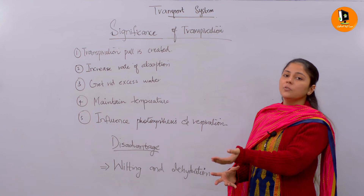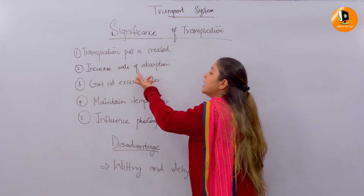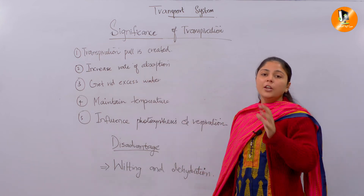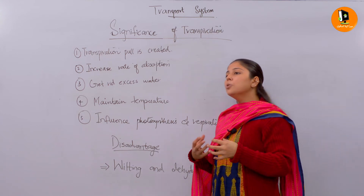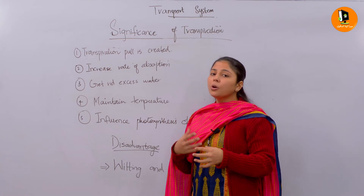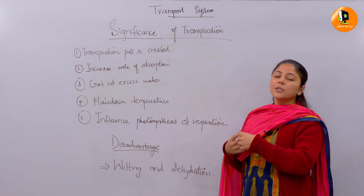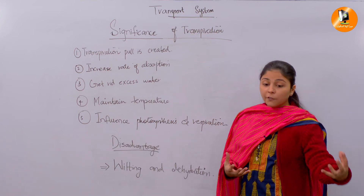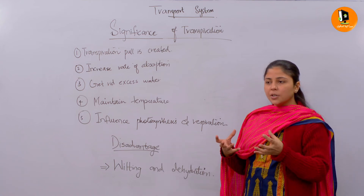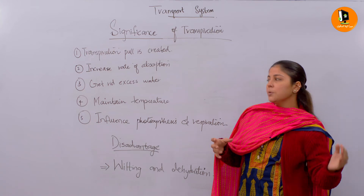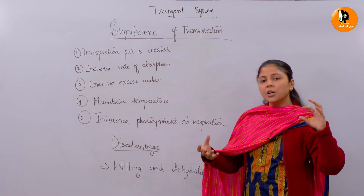The second most important significance is that transpiration increases the rate of absorption. When transpiration occurs, loss of water takes place. So when more and more transpiration occurs, more and more water is lost, which allows more and more absorption from the soil — the plant absorbs more water and gives it to the rest of its body. Both are directly proportional: more transpiration means more absorption of water molecules.